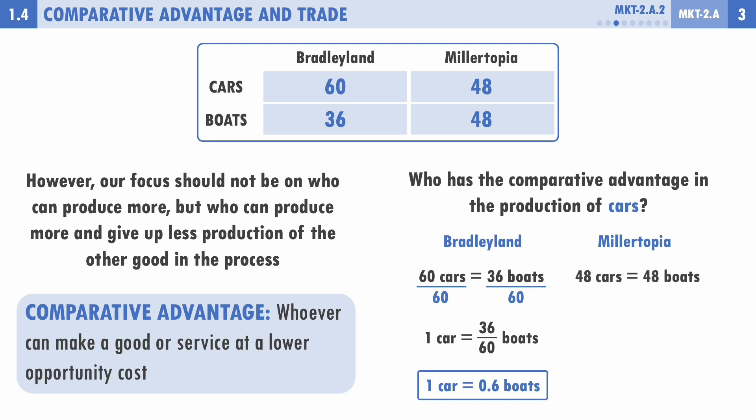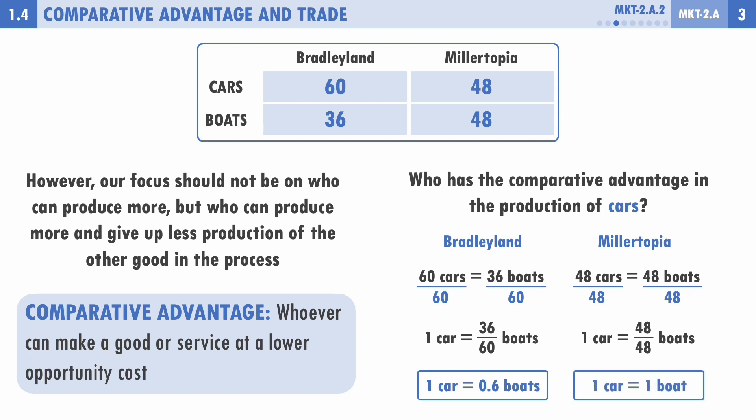For Millertopia, the same resources to produce 48 cars can produce 48 boats, so we set those equivalent. Dividing both sides by 48, one car equals 48/48 boats, so the opportunity cost for Millertopia of one car is one boat. For comparative advantage, who can produce one car and give up fewer boats? Bradley Land gives up only 0.6 boats versus Millertopia's one boat — so Bradley Land has the comparative advantage in cars.